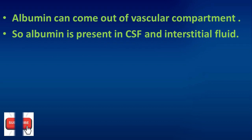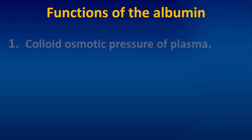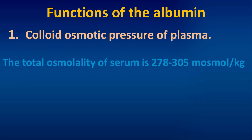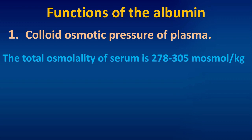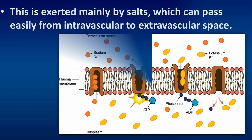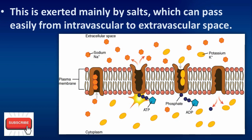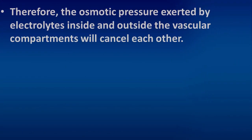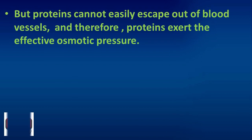Albumin can exit the vascular compartment and is present in CSF and interstitial fluid. One of the key functions of albumin is maintaining the colloid osmotic pressure of plasma. This pressure is exerted mainly by salts, which can pass easily from the intravascular to the extravascular space, so the osmotic pressure exerted by electrolytes inside and outside the vascular compartments will cancel each other.